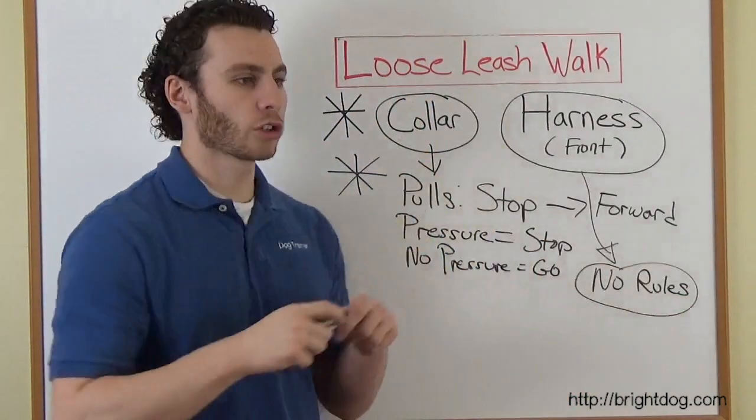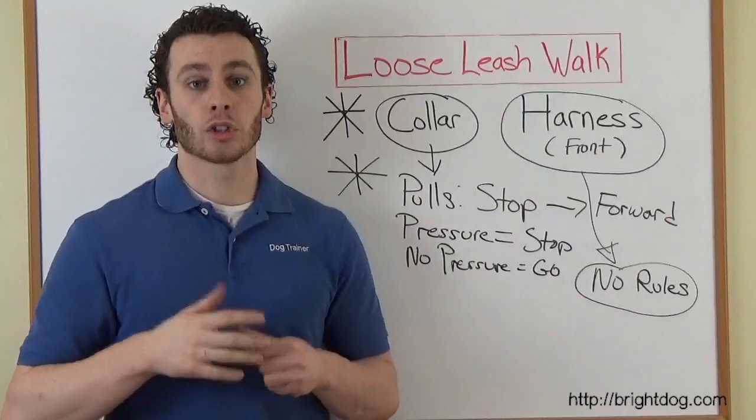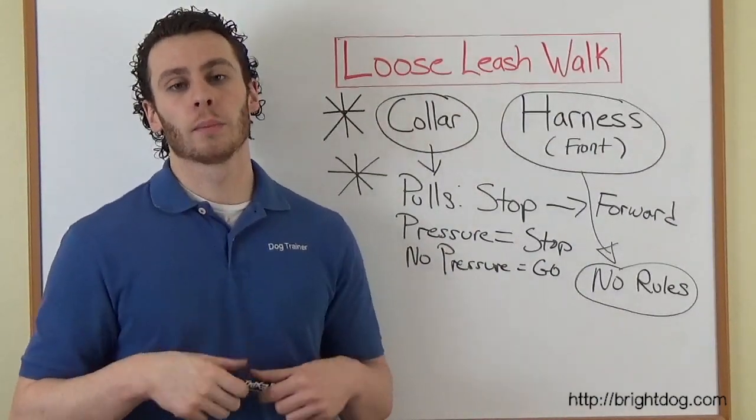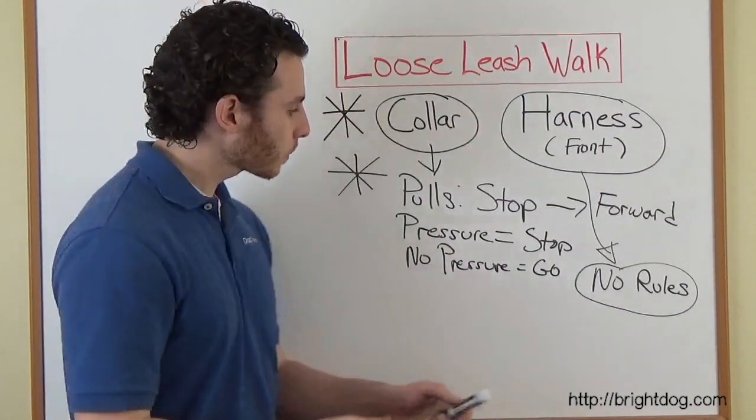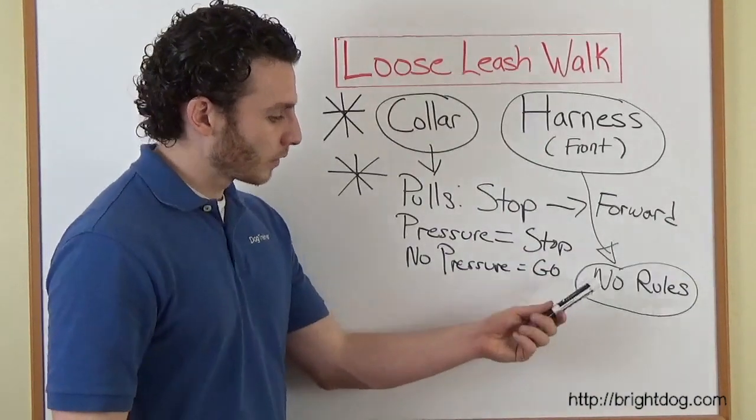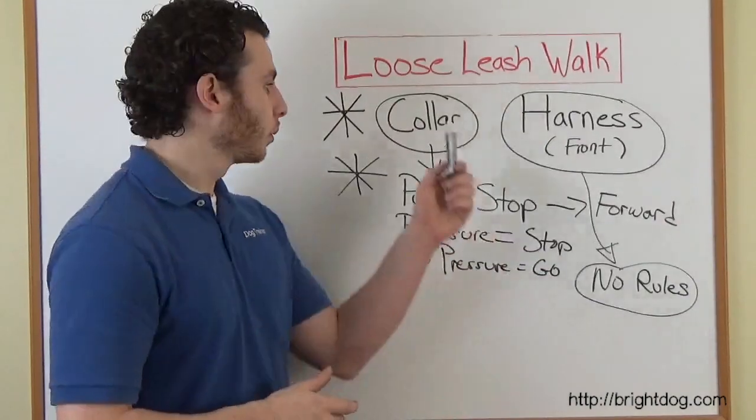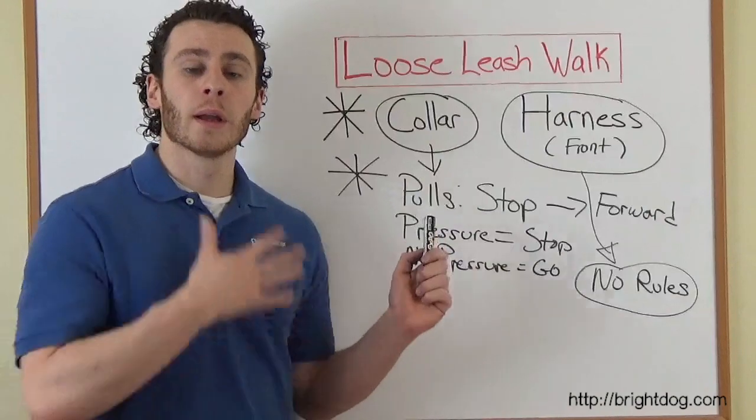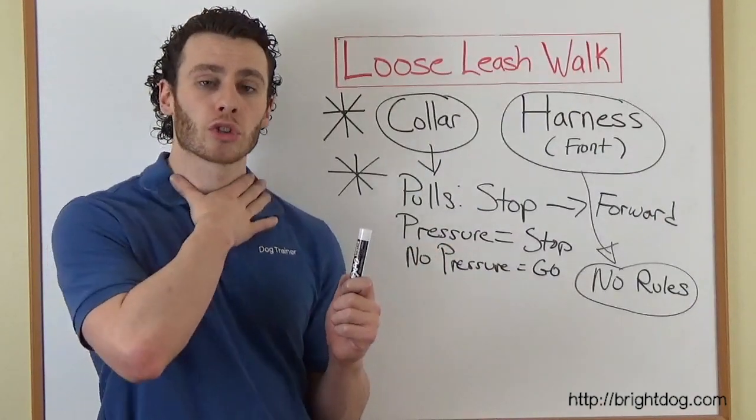On the collar, we're actually training the dog to choose not to pull because they want to go forward. So when they're on the harness, it's okay if they want to pull. You're not going to be ruining any of the training you're doing on the collar because the pressure is different. The pressure is no longer on the neck.